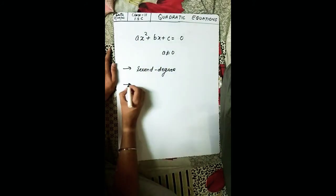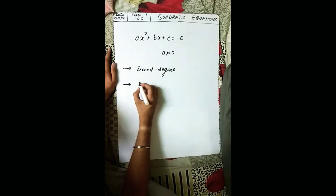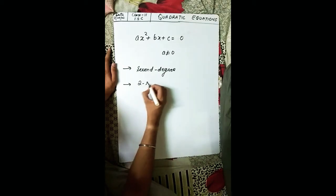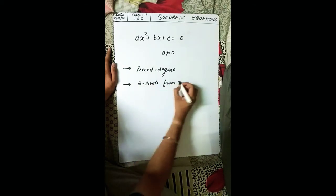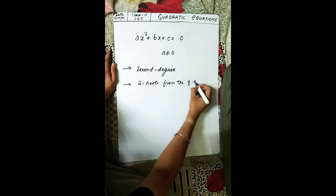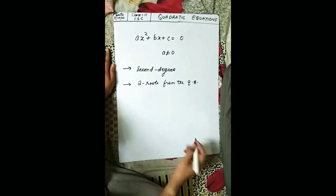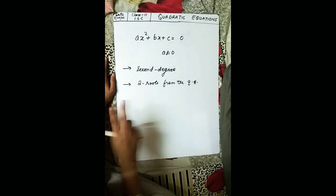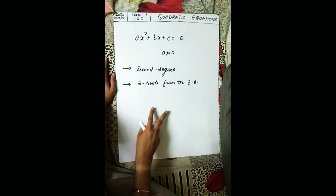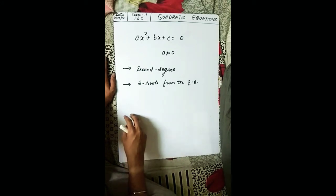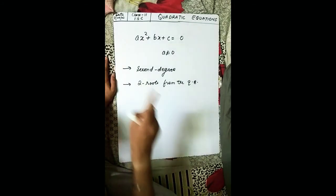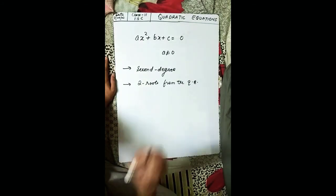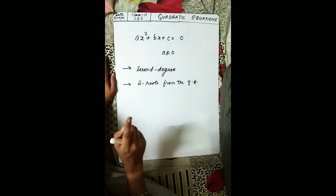How many roots do we get? We get two roots from the quadratic equation. The second point: there are three constants — a, b, c — and one variable, that is x.